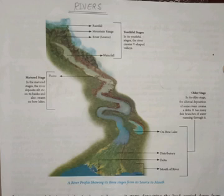A river is a stream of water that flows from a higher to a lower level of the earth's surface under the influence of gravity. River is a stream of water coming from above to below, and that is the reason of gravity.